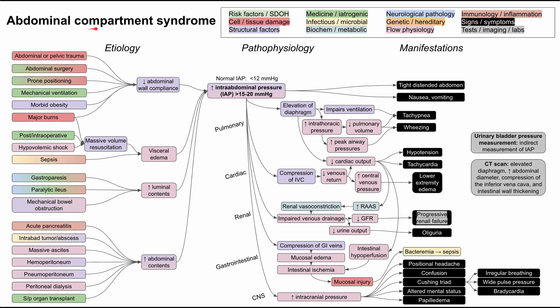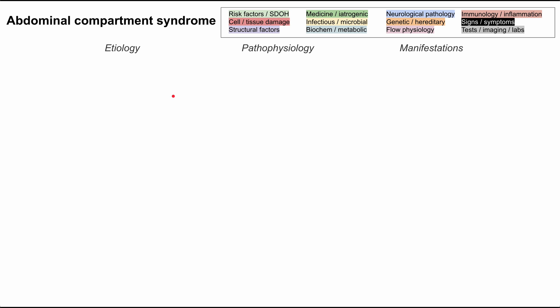This is a mechanism of disease map for abdominal compartment syndrome. I'll be talking about the etiology, the pathophysiology, and the manifestations for abdominal compartment syndrome. As in all of these flowcharts, each of the boxes is color-coded according to this legend in the top right, and I'll be clearing each of these boxes and talking through them one by one as we repopulate the flowchart.